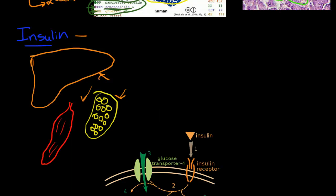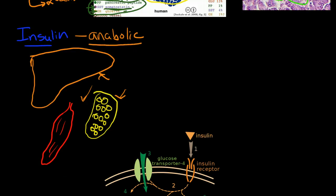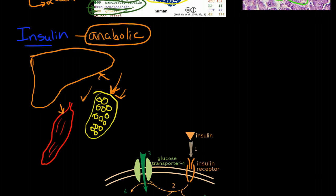So because of this, insulin is actually considered an anabolic steroid because it actually encourages the body to create new things like new fat, new muscle, etc.